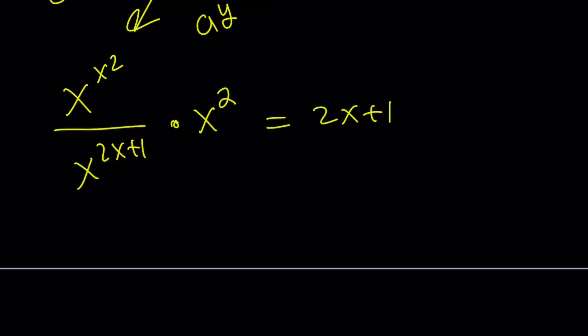Now here's the most magical part. We're going to multiply both sides by this. And we're going to end up with something super-duper nice. I love it. x^(x²) multiplied by x² equals x^(2x+1) times 2x+1.